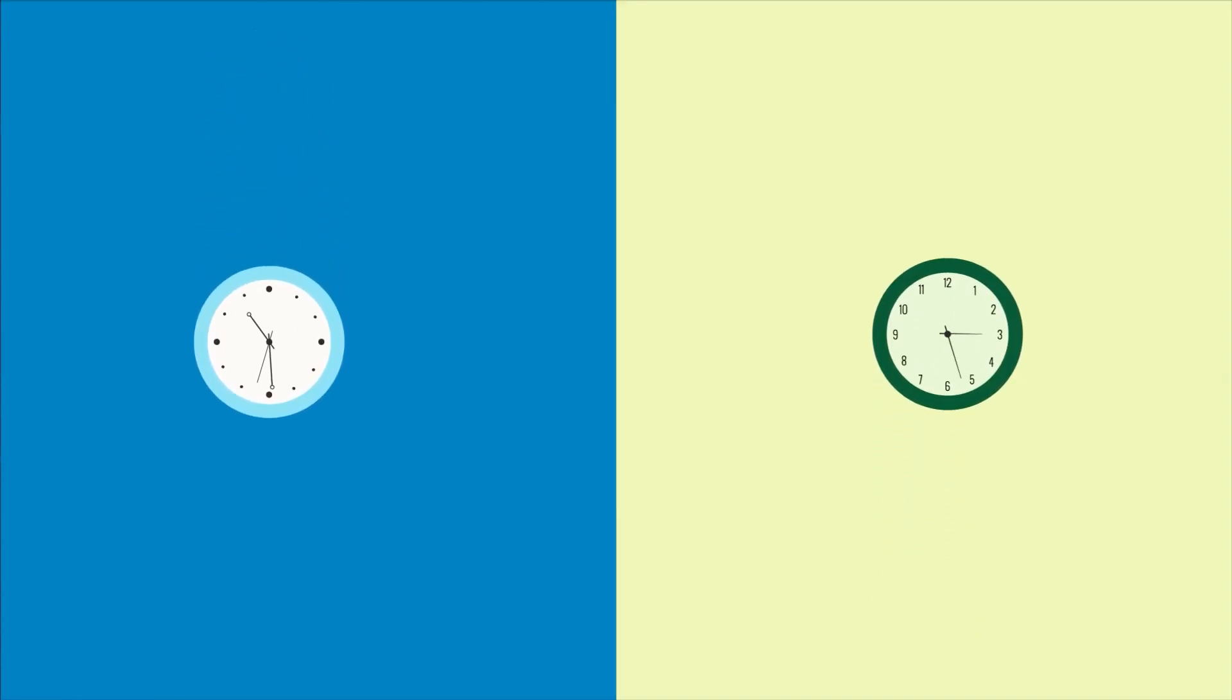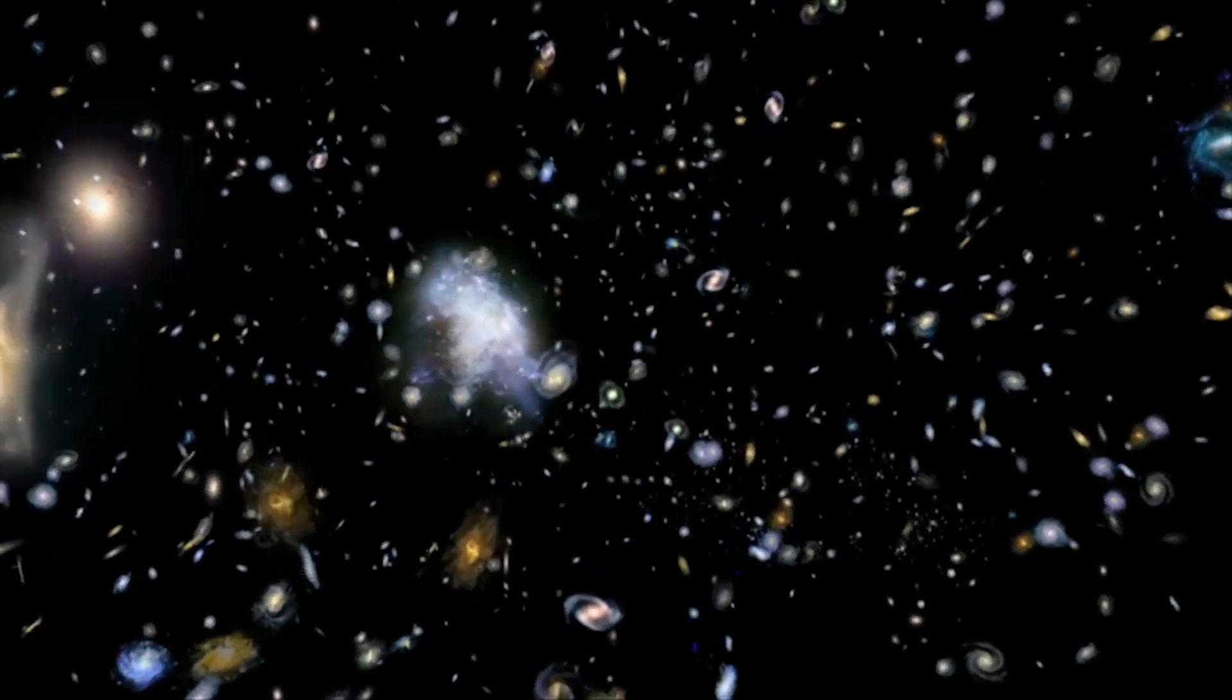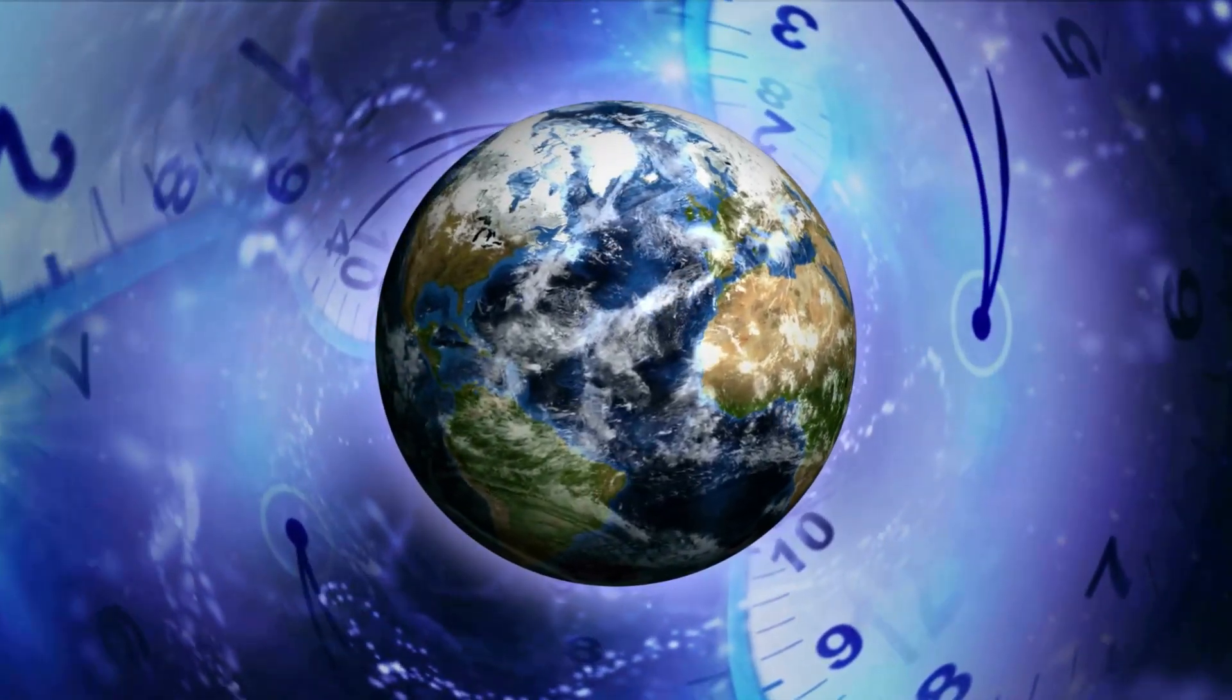Each clock moves slower in relation to one another the faster their relative speeds are. Since far-off galaxies are accelerating away from us, time should also be moving more slowly, right?